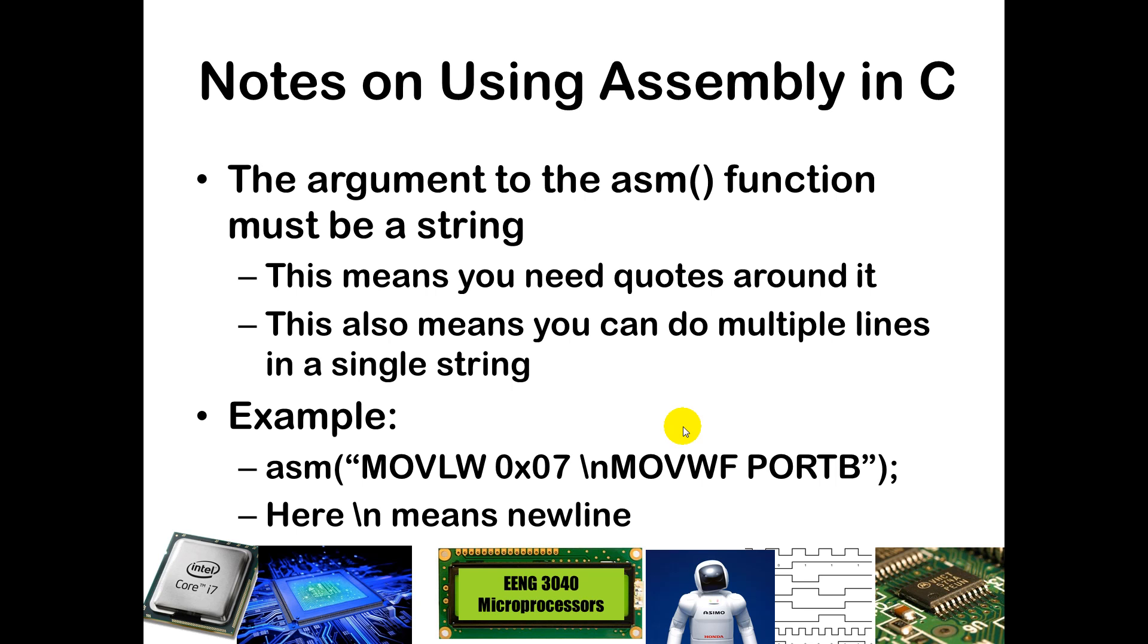So, some notes on that. In the asm function, your argument has to be a string, so you do need these double quotes around it. You can actually do two different lines at once. So if you wanted to move a literal into W and then move that value on over to port B, you would have the flexibility to do that. You would just need to put in this slash n, which is the way in the C language you indicate an end line, the end of a particular line of code.